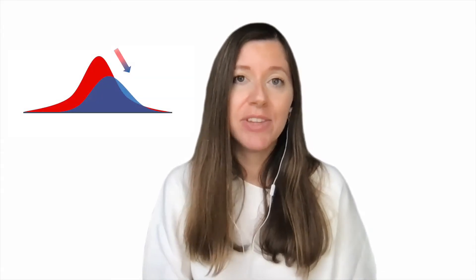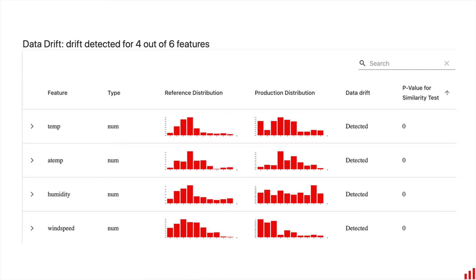Evidently helps visualize the model performance and detect and resolve issues. For example, things like data drift. If the input data changes, the model operates in a new reality. We help detect this shift in the distributions and visually explore it.